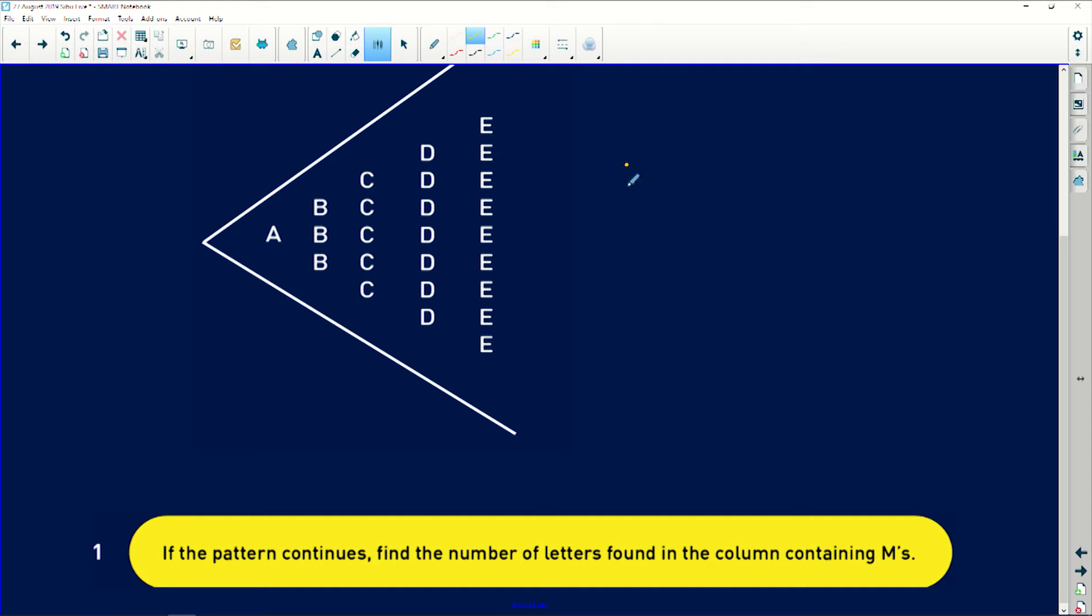Now what do we notice here? We notice that there's actually one of the A's, right? The B's, how many B's do we have? Well we have got three. How many C's? Two, four, five. How many D's? Well if you look here, one, three, five, you guessed it, it's going to be seven. And then the pattern is going to continue like this.